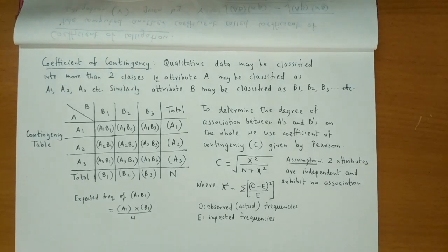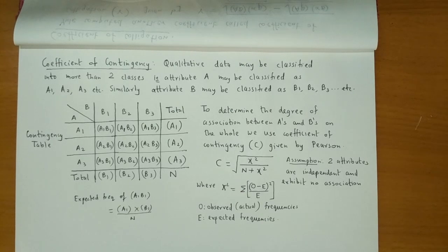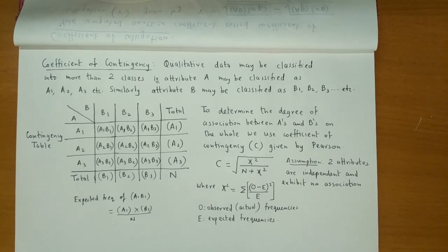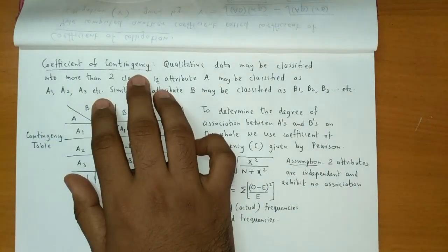Many times we need to divide attributes into more than two classes. Until now, we have been using dichotomous classification — splitting attributes into only two classes. But what if we need three or more classes? For example, Gender could be divided as Male, Female, and Transgender. Or for skin color, we could have Fair, Dark, and Whitish — three classes. In such cases, to check the association between attributes, we use the Coefficient of Contingency.